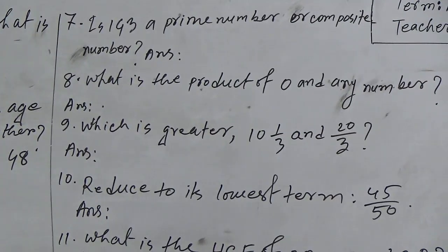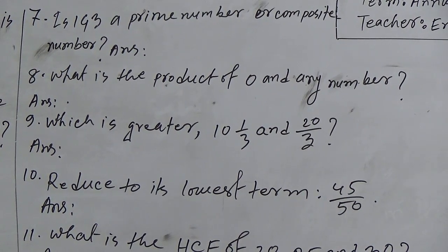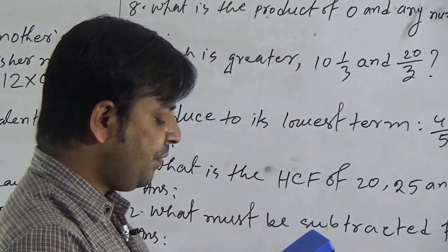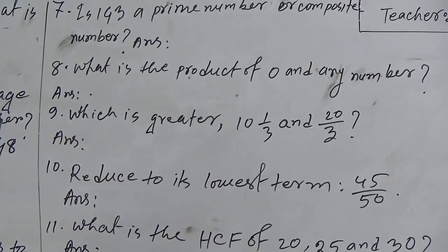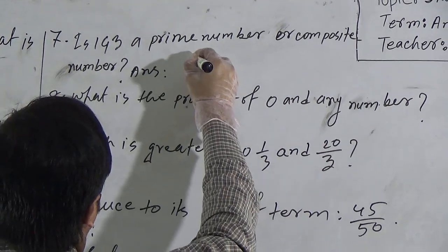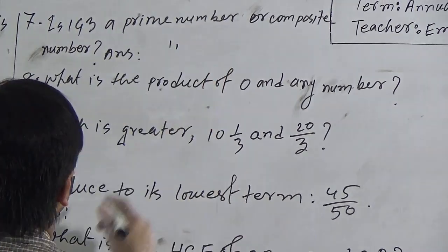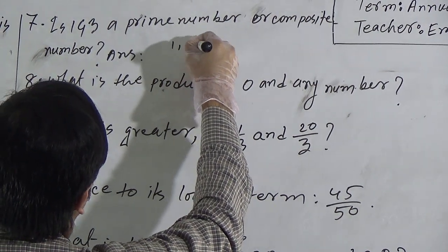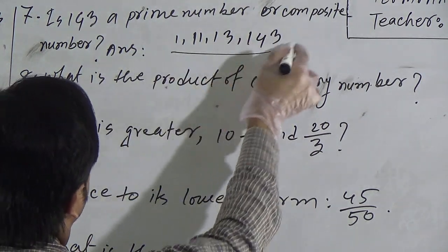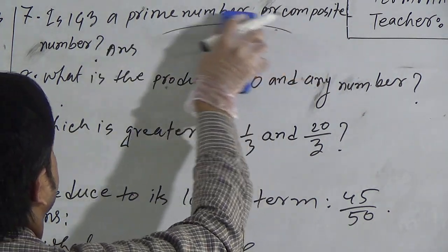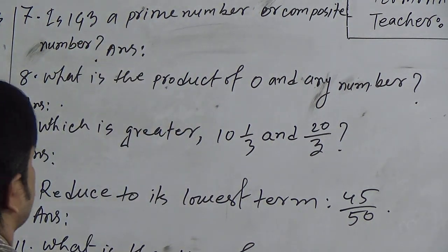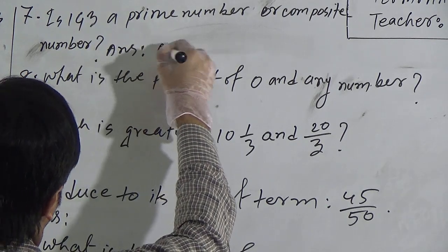Question 7: Is 143 a prime number or composite number? A prime number is divisible by only 1 and itself. But 143 is divisible by 1, 11, 13, and 143, so it has more than two factors. Therefore, 143 is not a prime number — it is a composite number, as it has more than two factors.